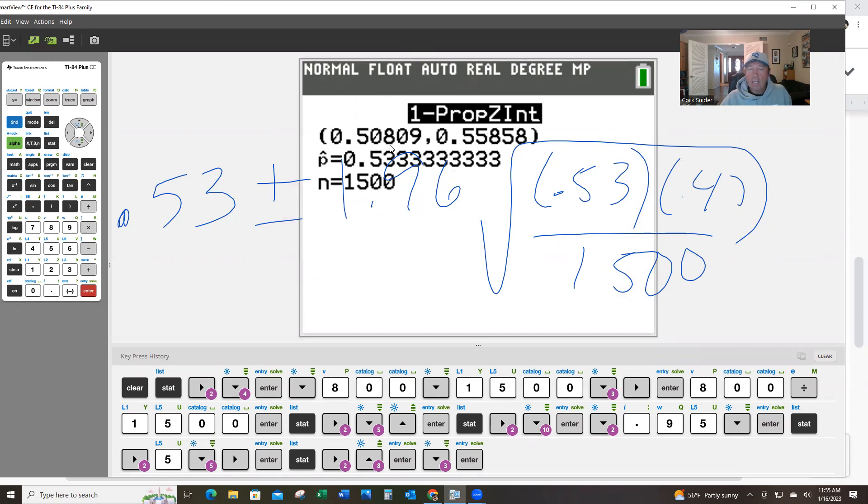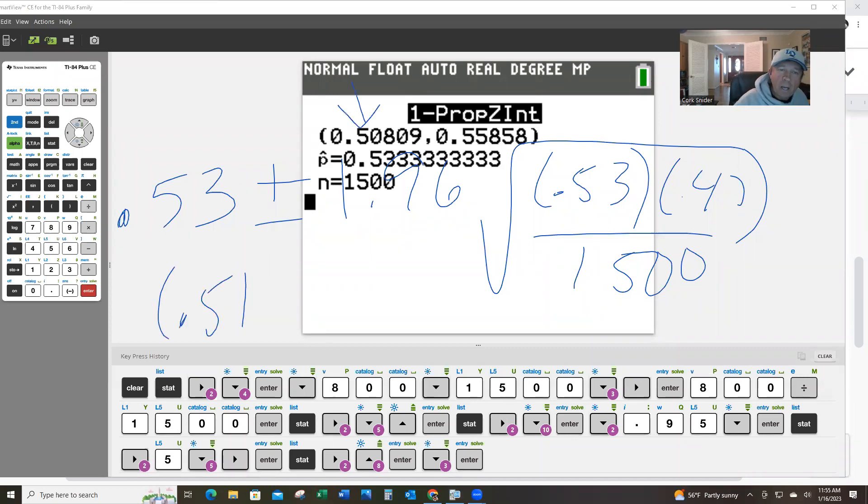So, in this case, look, the lowest we think it can be is about 51%, which is right here. The highest we think it can be is about 56%. But in both numbers, they're over 50%, so we're 95% confident that candidate A will win.